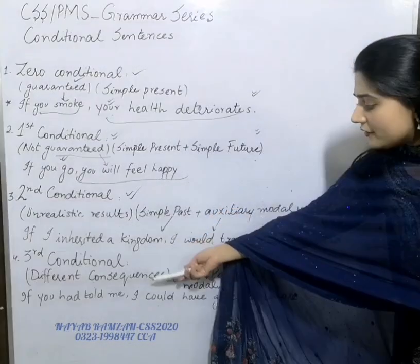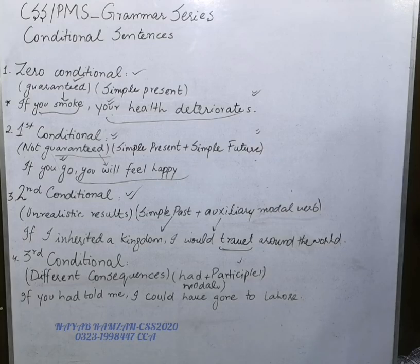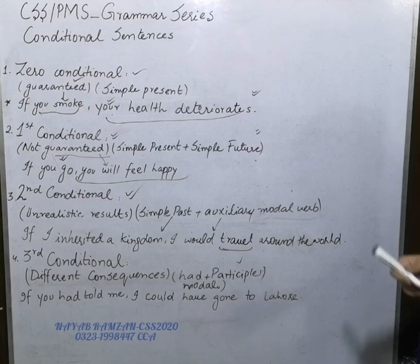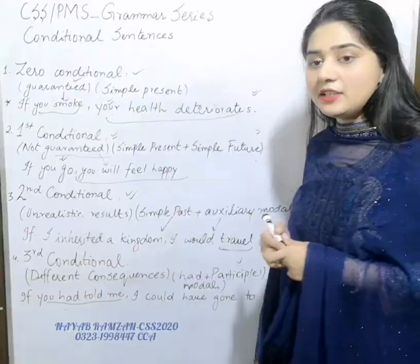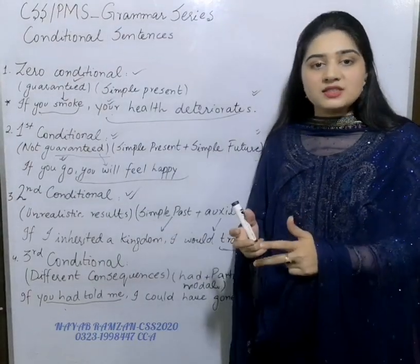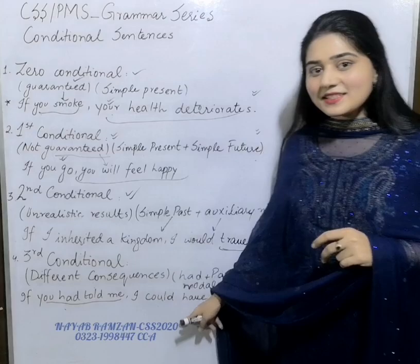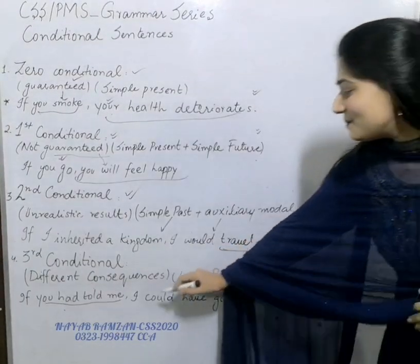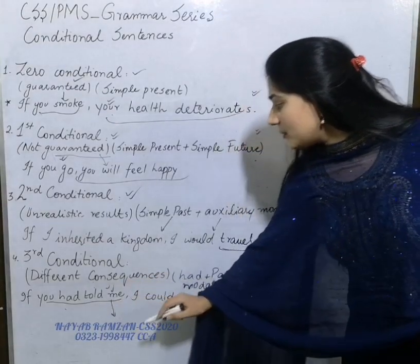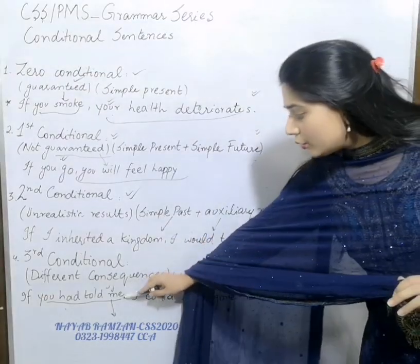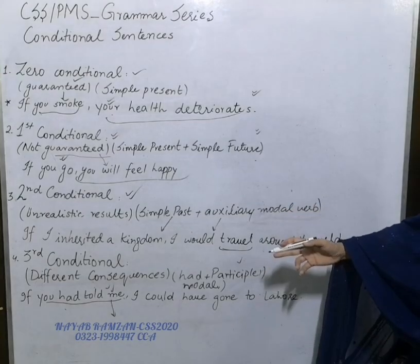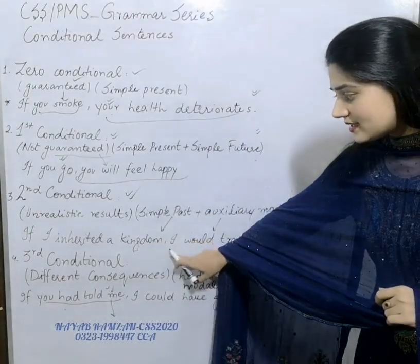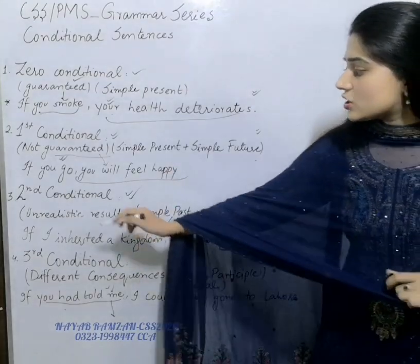In third conditional there are different consequences for past situations. For example: 'If you had studied, you could have passed CSS.' This implies that you did not study and did not pass. This means the action did not happen and the consequences are now different. The important difference between second and third conditional is that both have unrealistic or unfulfilled conditions, but third conditional refers to the past — something that did not happen.